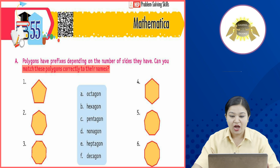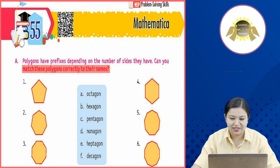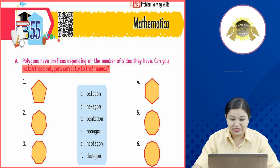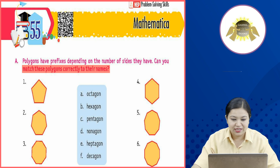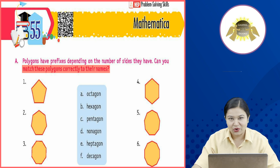You have to correctly match: the first is your pentagon, which has five sides, so we call it pentagon. The second is your heptagon, and the third is your octagon.